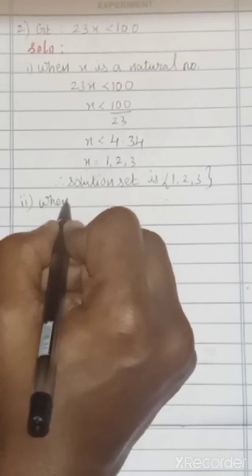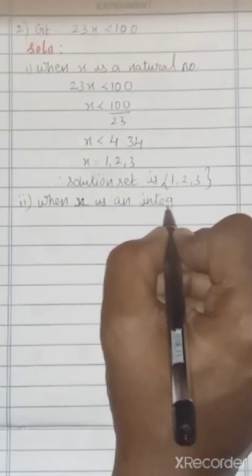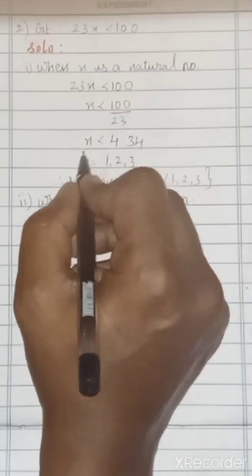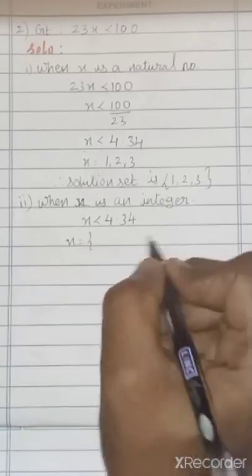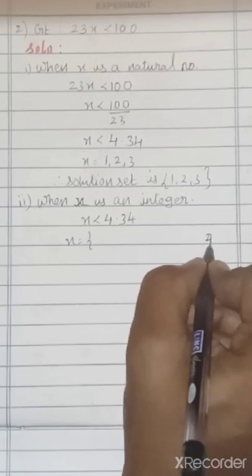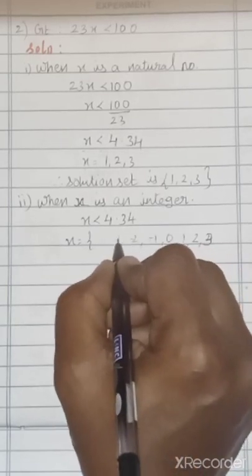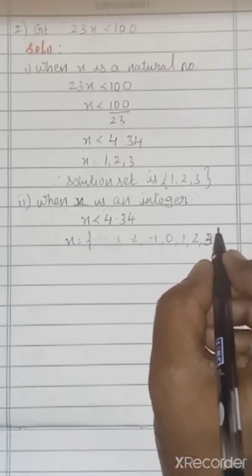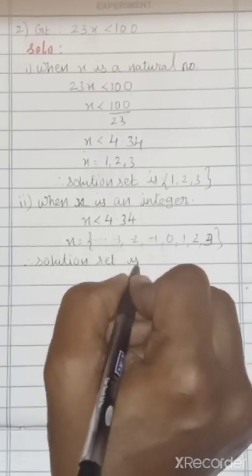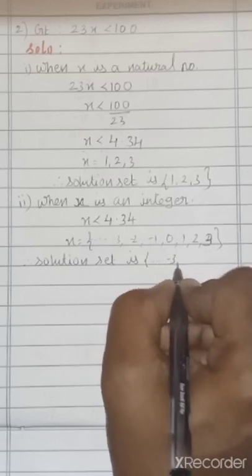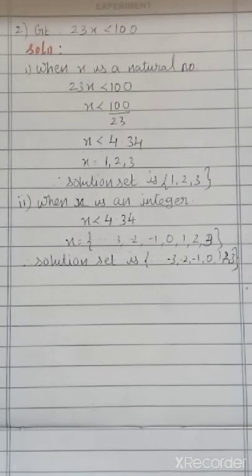Second subdivision — when x is an integer: integers mean from minus infinity to plus infinity. We got x < 4.34, so x can be 3, 2, 1, 0, −1, −2, −3, etc. Therefore, the solution set is {…, −3, −2, −1, 0, 1, 2, 3}.